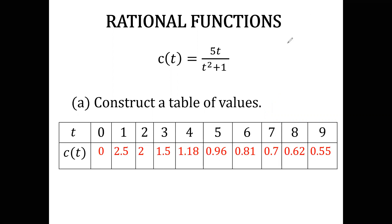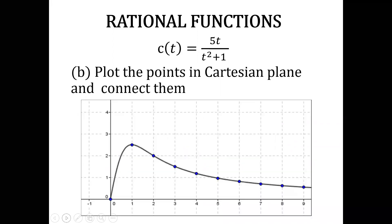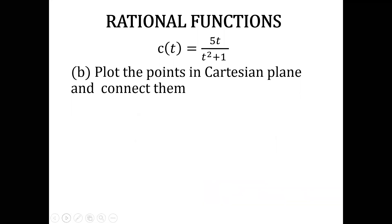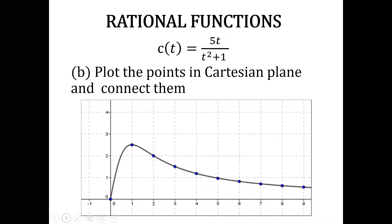The next task is to plot the points in the Cartesian plane and connect them. The given points are (0, 0), (1, 2.5), (2, 2), (3, 1.5), and so on. The points have already been plotted at coordinates corresponding to each t value.